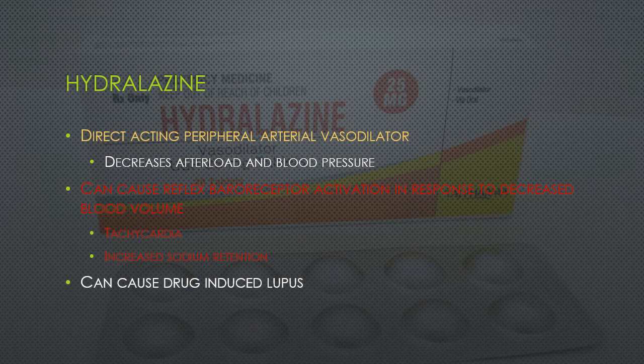Hydralazine is a vasodilator — a direct-acting peripheral arterial vasodilator — that decreases both afterload and blood pressure. It can cause a reflex baroreceptor activation in response to decreased blood volume, which causes tachycardia and activates the RAS system, leading to increased sodium and intravascular fluid retention. It also can cause drug-induced lupus. Hydralazine is similar to nitroglycerin and isosorbide, except that hydralazine works on the arteries where the other two work on the venous system and the coronary arteries specifically.